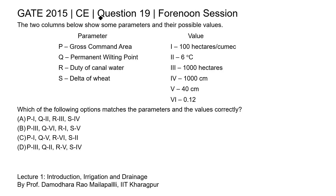This is question 19 of civil engineering paper, GATE 2015 forenoon session. Two columns are given showing some parameters and their possible values. The parameters are: gross command area, permanent wilting point, duty of canal water, and delta of wheat. The values given include 100 hectares, 6 degrees Celsius, 1000 hectares, 1000 centimeters, 40 centimeters, and 0.12.